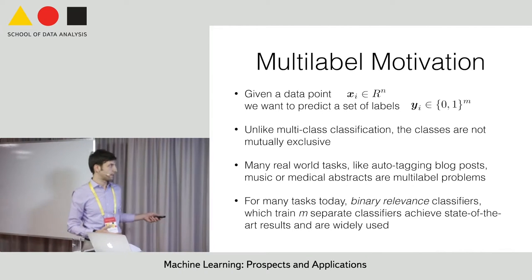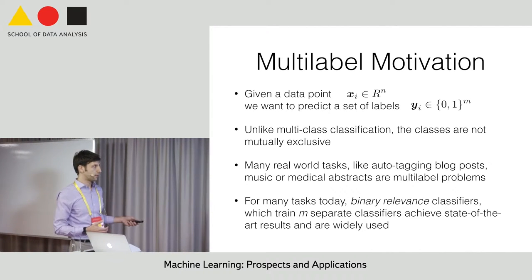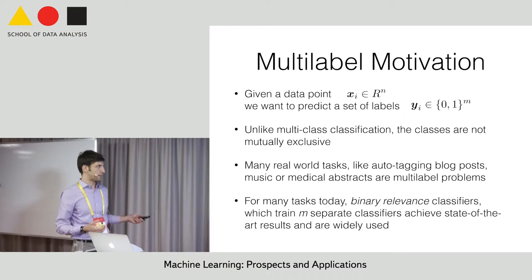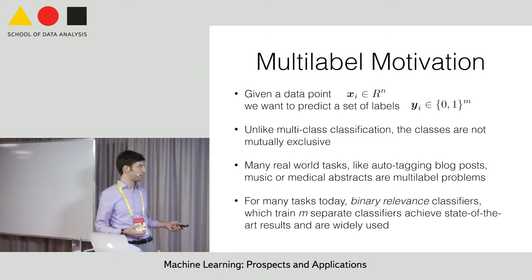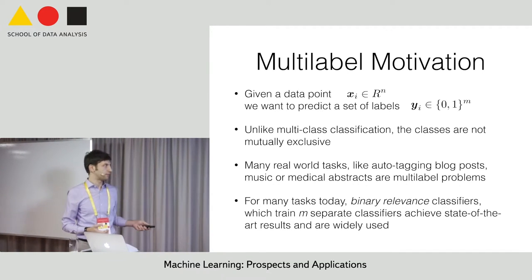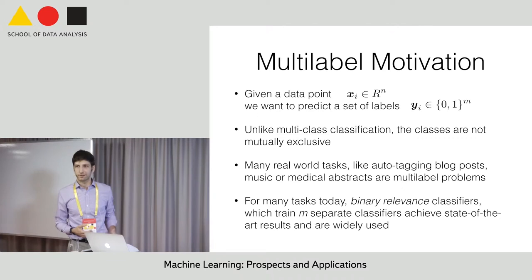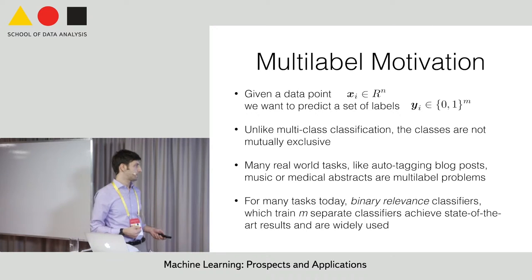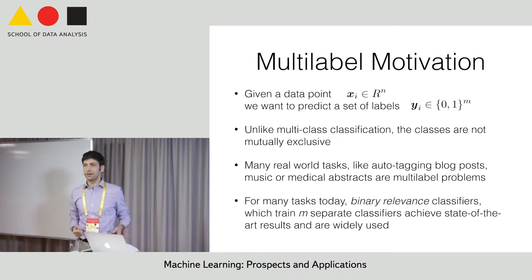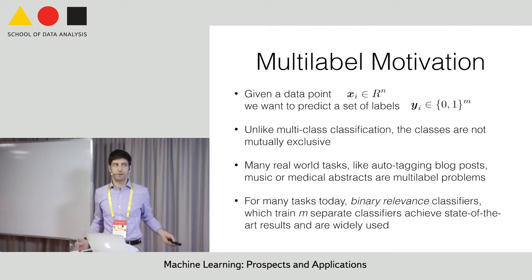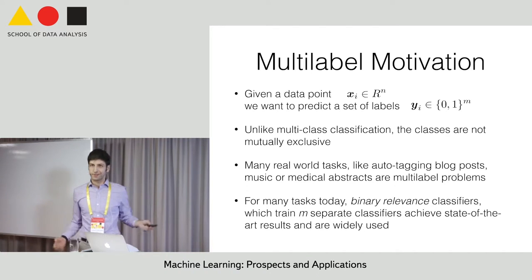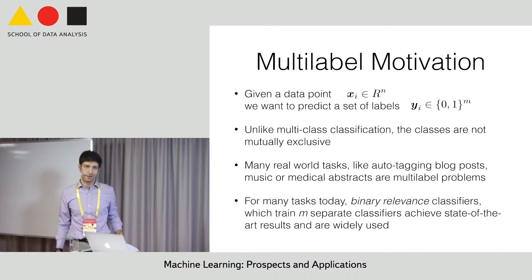In multi-label classification, our data point is a vector in some R^N. We want to predict a set of labels which don't have to be mutually exclusive, so you could say it's a more general case than multi-class classification. A lot of real-world tasks are multi-label — we could cobble together any number of tasks for the same data set and just say now it's a multi-label task.